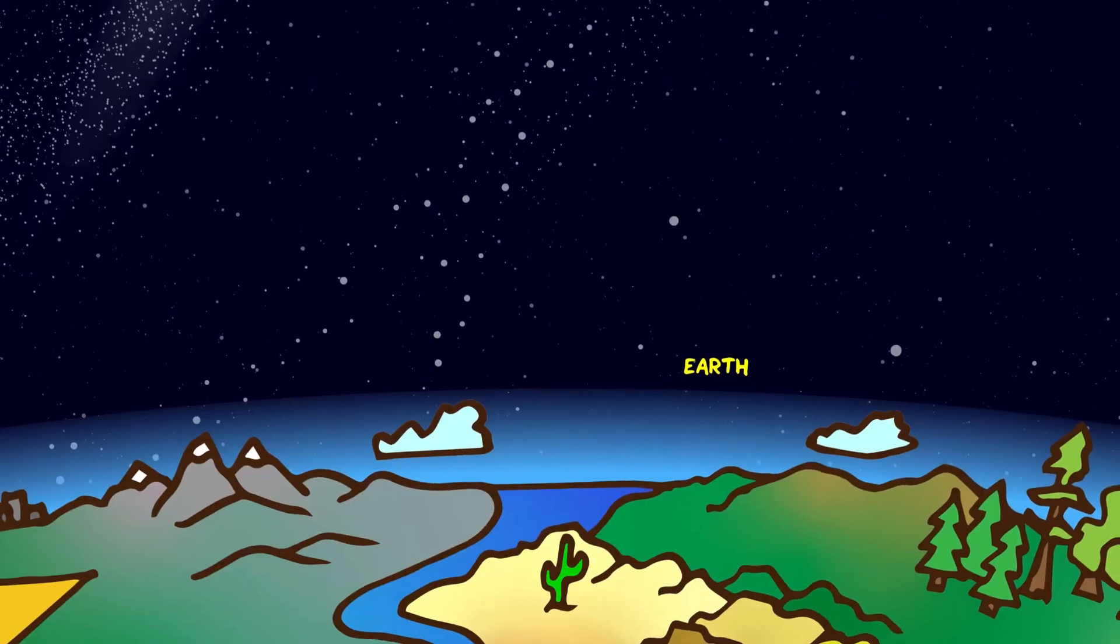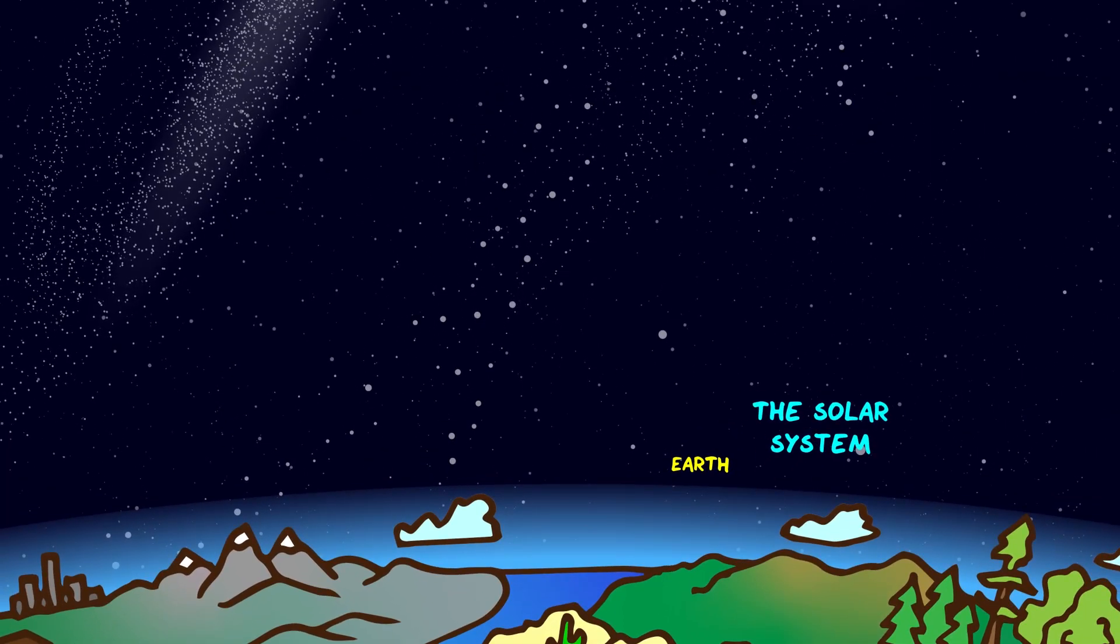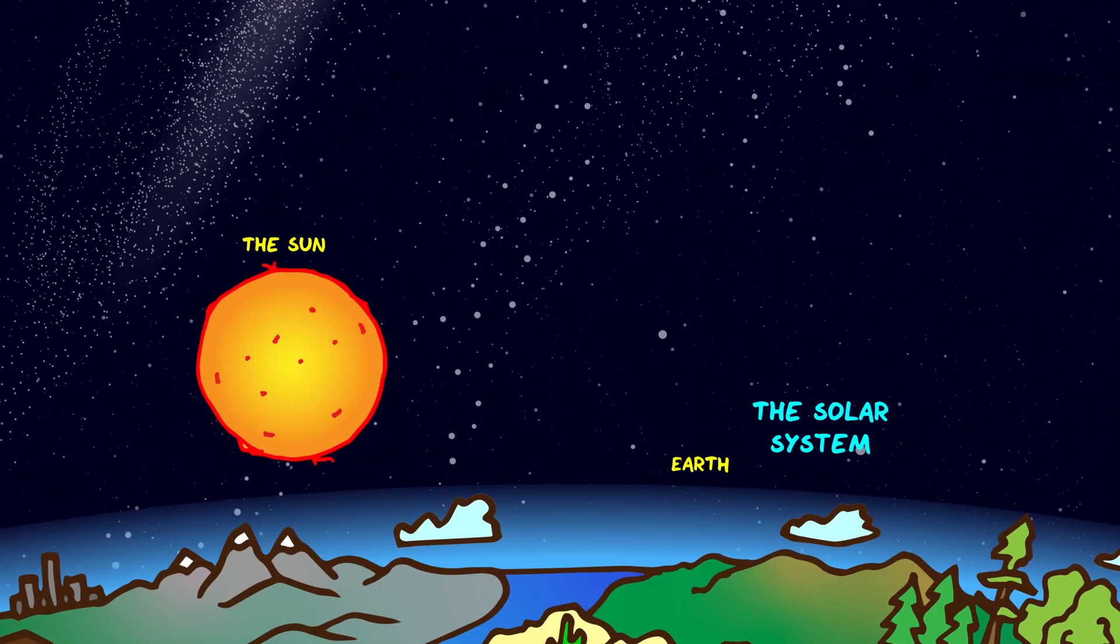Looking up from our Earth into the sky we see our solar system. At the center is our Sun, a yellow dwarf star that's lived for about 4.6 billion years and will live for 5 billion more before burning out.